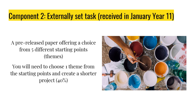The second project, the externally set task which you receive in Year 11, you'll be given five different starting points to choose from — different themes — and we never know what they're going to be until the exam paper comes through. You just choose one of those themes and you build up a project with all the different assessment criteria involved over that one term.